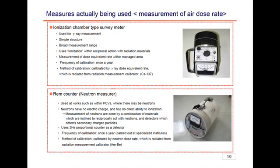As a device that measures the radiation dose in the air, there is an ionization chamber type survey meter for gamma rays. There is an ionization chamber type survey meter in the cylinder part on top, and once the gamma rays hit this part, the gas inside ionizes and the current is indicated. This is commonly used to measure the airborne radiation inside the controlled area, and we calibrate this device once a year with a dose-equivalent rate of cesium-137 standard radiation source.